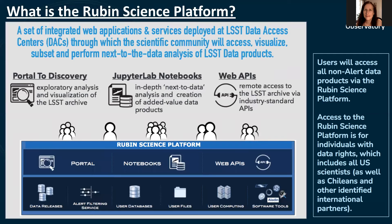The Rubin Science Platform, or RSP, is a set of integrated web applications and services deployed at the data access centers, the DACs, through which scientists will analyze, access, visualize, query, and perform next-to-the-data analysis of the LSST data products. Next-to-the-data analysis refers to how users will bring their analysis codes and visualization tools to the data and to the computational environment of the RSP, because the data products are too large to download. The RSP has three main aspects: first, the portal aspect, which will offer exploratory interfaces and visualization tools; second, the notebook aspect, which will allow users to create Jupyter notebooks in a curated environment; and third, the API aspect, which will allow remote access to the archive. For example, alert brokers might use an API to automatically query the Rubin static sky catalogs to identify potential host galaxies for DIA sources that pass a young supernova filter.